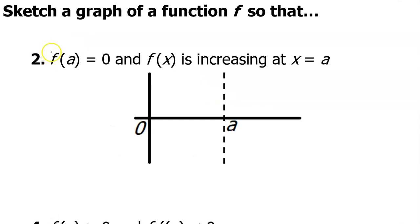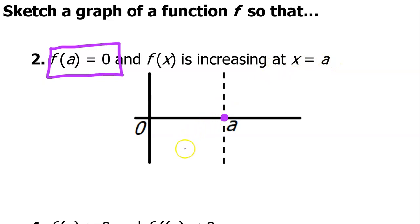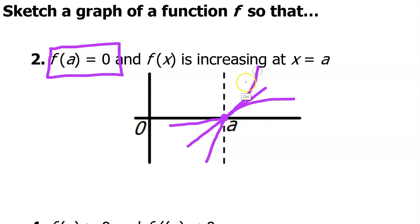Problem number two. This part says that f at A is zero. So the value of the function at A is zero — it's right on the line. And the function is increasing at A, so it should be going uphill. Again, I've drawn this as a straight line, but I could have drawn it concave down or concave up.